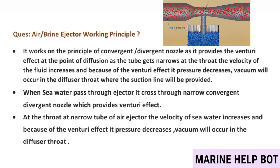Air brine ejector working principle: it works on the principle of a convergent-divergent nozzle, providing the venturi effect. At the point of diffusion, as the tube narrows at the throat, the velocity of the fluid increases and because of the venturi effect, pressure decreases. Vacuum occurs in the diffuser throat where the suction line is provided. When sea water passes through the ejector, it crosses the narrow convergent-divergent nozzle, increasing velocity and decreasing pressure.